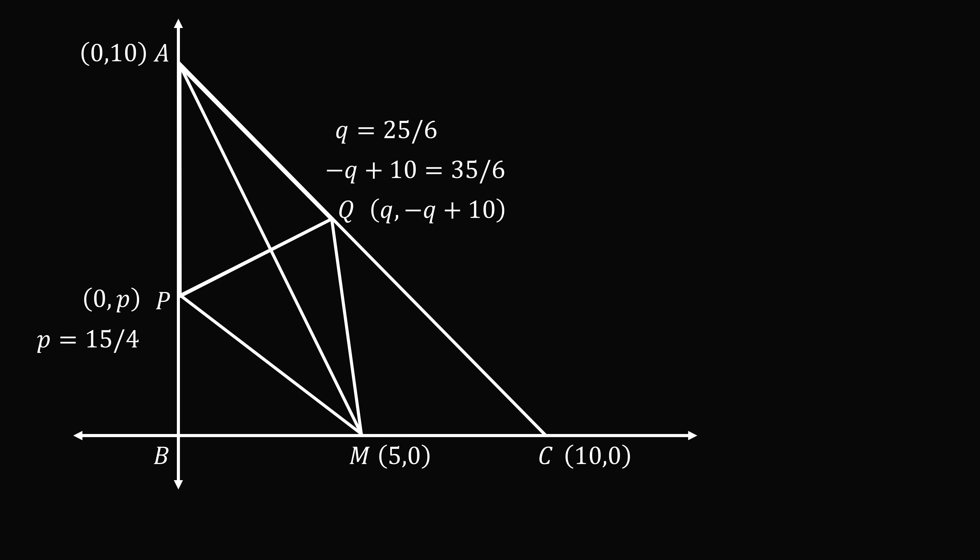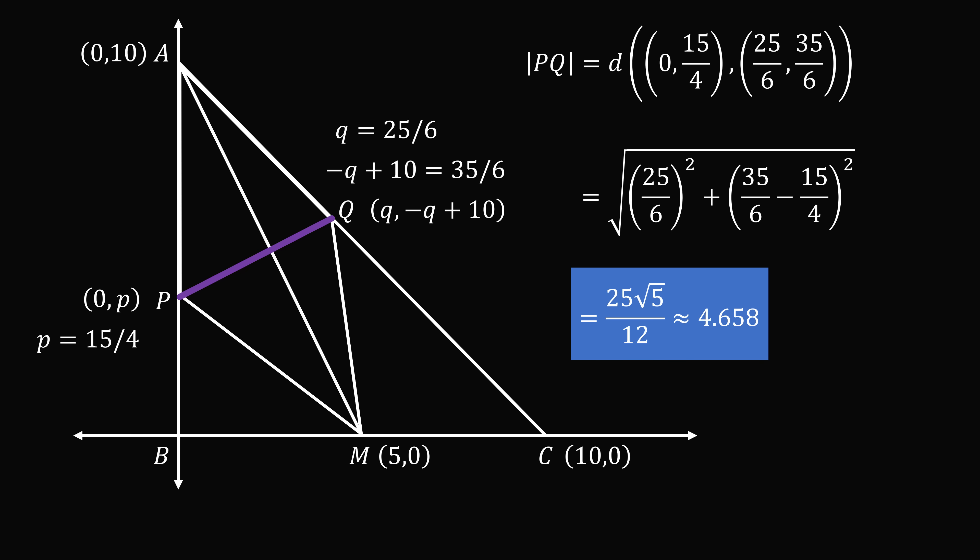We need to know the length of the crease PQ. So we just want to figure out the length of PQ. But we know the coordinates of P are 0 comma 15 over 4. And we know the coordinates of Q are 25 over 6 and 35 over 6. So we just applied the distance formula. It'll be the square root of the square of 25 over 6 plus the square of 35 over 6 minus 15 over 4. I will spare all the details right here of squaring, finding a common denominator, and then finding all of the simplifications. We end up with the result of 25 root 5 divided by 12. And that's approximately equal to 4.658. And almost like magic, we figured out the answer with coordinate geometry. Wow.